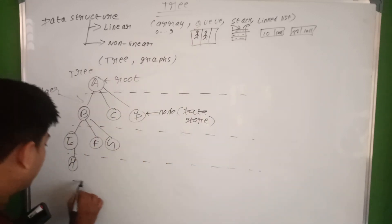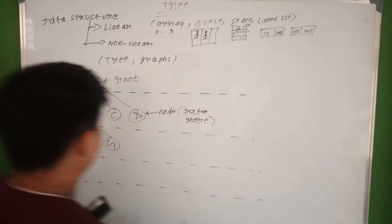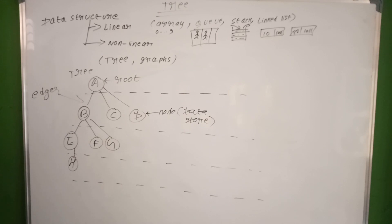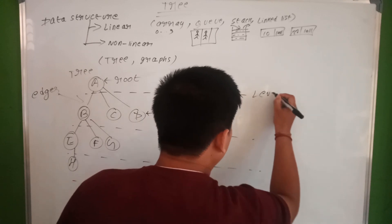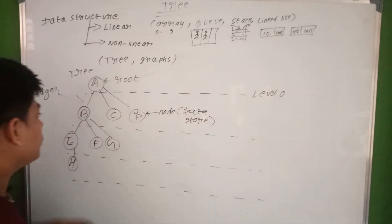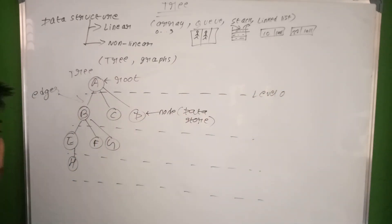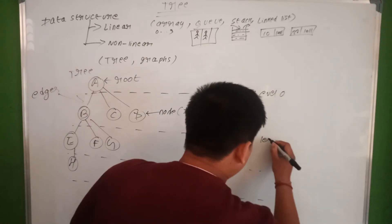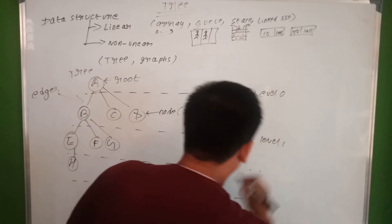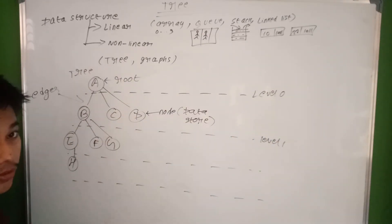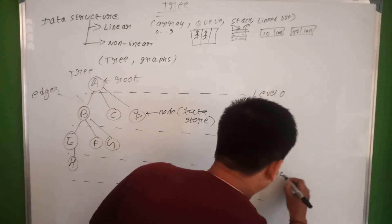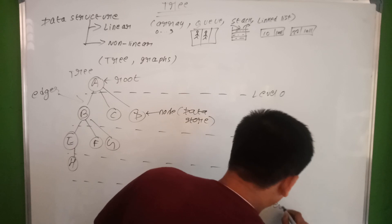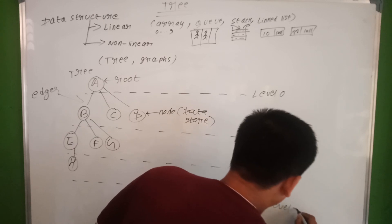If we consider levels: level one is the root, for example A. Then the next level has B, and the next has C and D. So the first area is level 1, B is level 2, and C and D are at level 3.